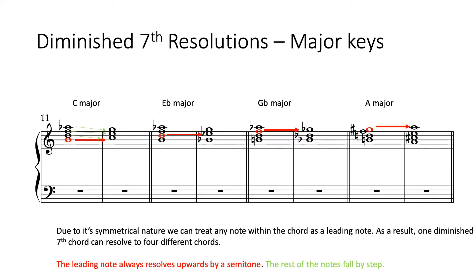So if I play that first resolution — there's that diminished 7th chord, and it resolves to C major. The B moves up to the C, the D moves down to the C, the F moves down to the E, and the A flat moves down to the G.